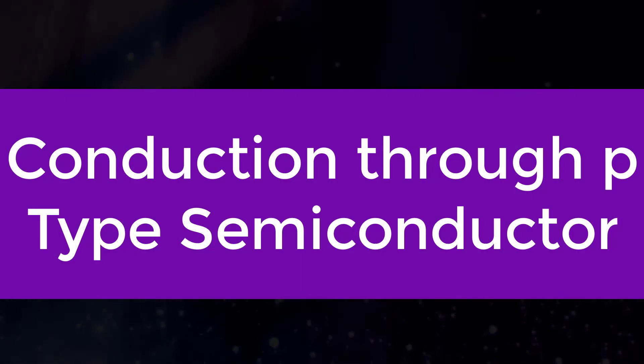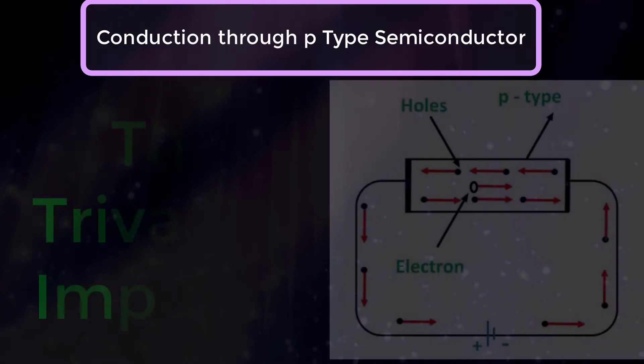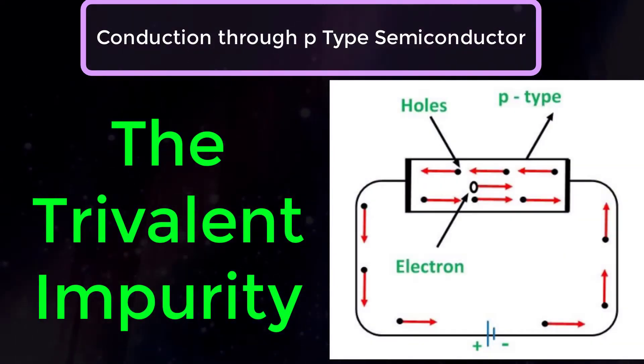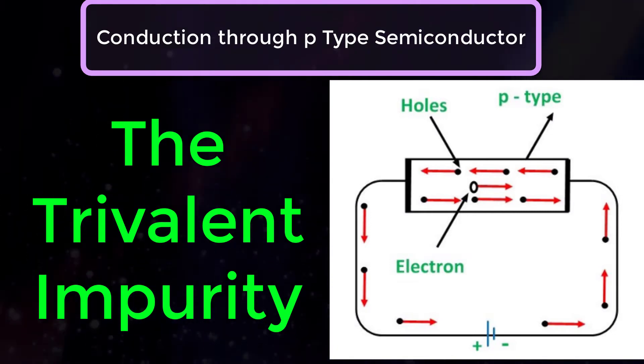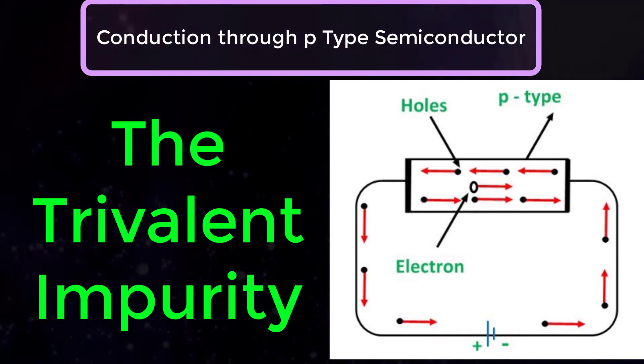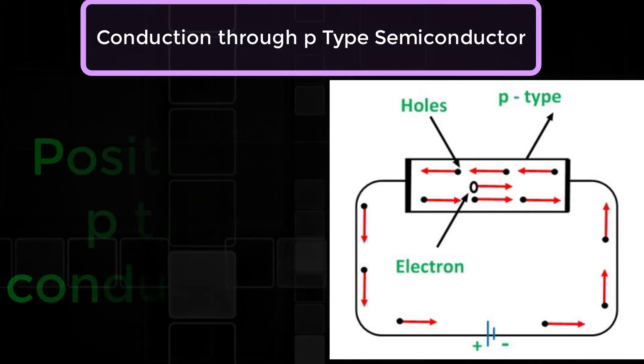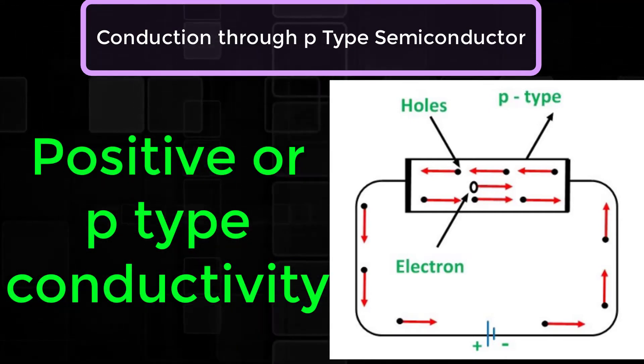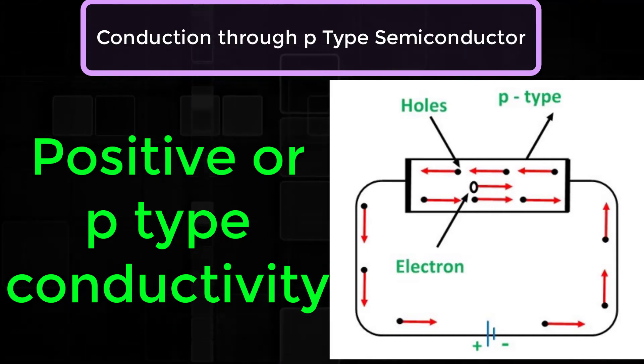Conduction through P-Type Semiconductor: In a P-Type Semiconductor, large number of holes are created by the trivalent impurity. When the potential difference is applied across this type of semiconductor as shown, the holes are available in the valence band or directed towards the negative terminal.